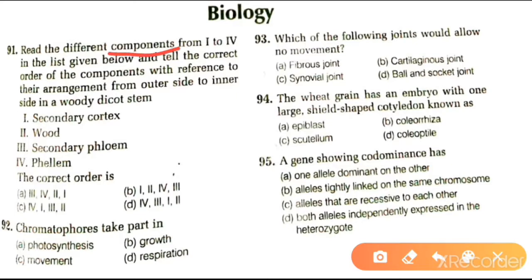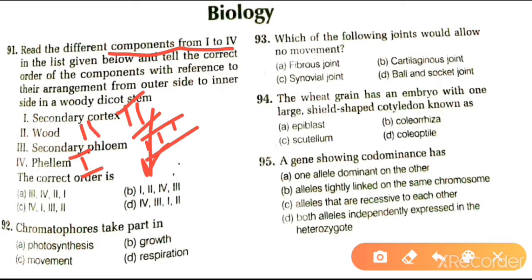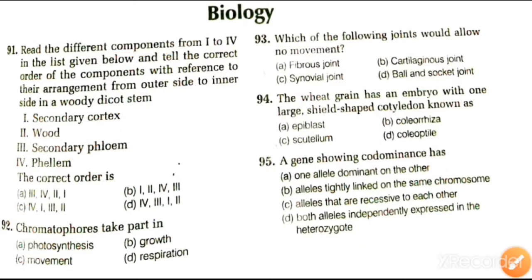Our first question is: read the different components from first to fourth in the list given below and tell the correct order from outer side to inner side of a dicot stem. The arrangement is secondary cortex, wood, secondary phloem, phellum. The correct order is: first phellum, then secondary cortex, then secondary phloem, and then wood. So the answer is C: fourth, first, second, third.